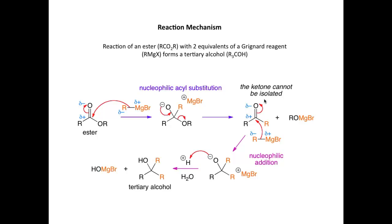It's important to recognise that the ketone cannot be isolated. The ketone is actually more reactive to the Grignard than the ester is. This carbon in the carbonyl is more electropositive, or electrophilic, than this carbon here. So as soon as the ketone is formed, it reacts with another molecule of the Grignard reagent, which acts as a nucleophile. It attacks the delta-plus carbon, pushing the electrons onto the electronegative oxygen, and we form this second tetrahedral alkoxide ion. On workup, we protonate the oxygen and form a tertiary alcohol.